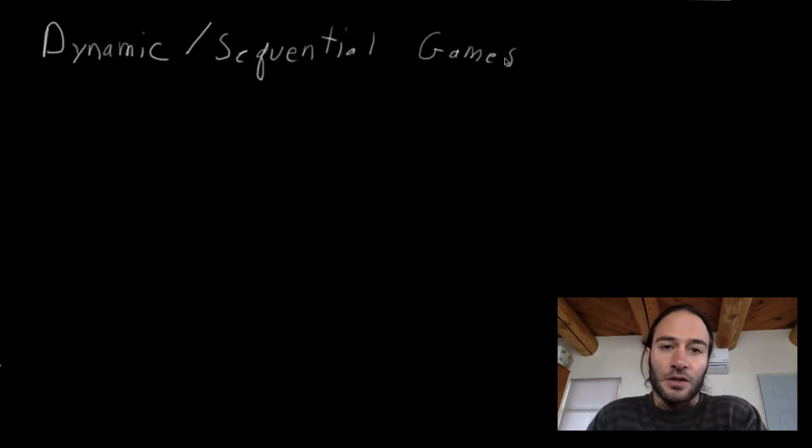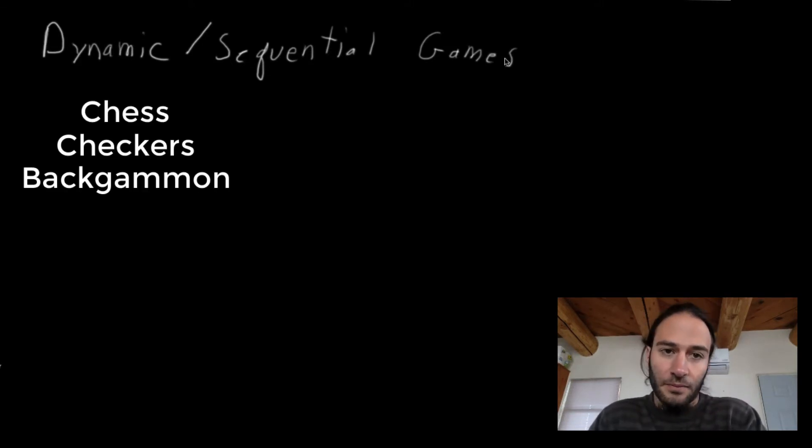The simplest example of a dynamic or sequential game is something like a board game: chess, checkers, backgammon, go. One player moves, then the next player moves, then one player moves, then the next player moves, and so on.